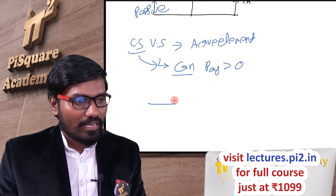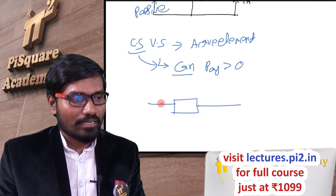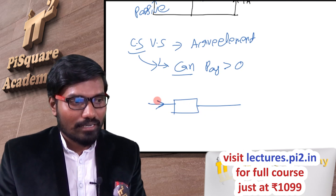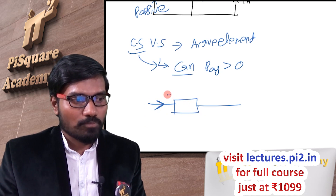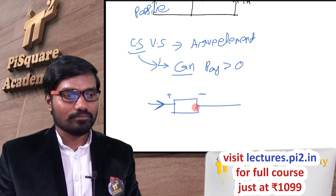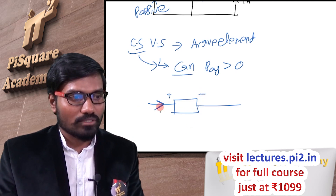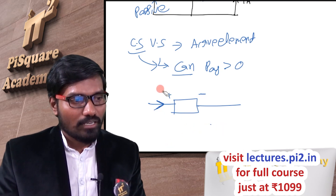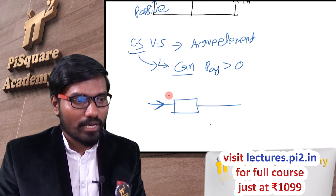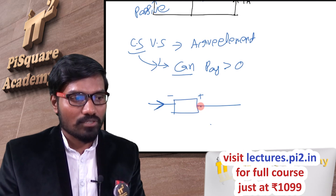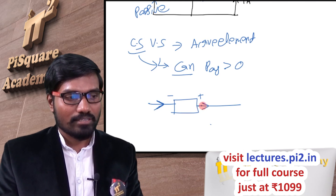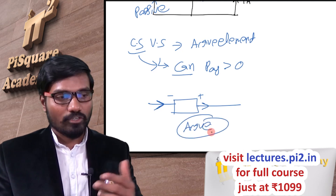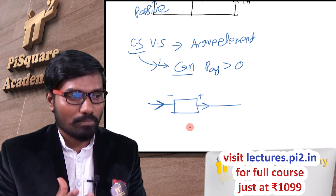If we have some element and the current direction is given — if current is entering at the positive terminal, this element is a passive element. If the current direction is such that current is leaving at the positive terminal, it is an active element. This is one way of determining whether an element is active or passive, though it is not a fully generalized rule.